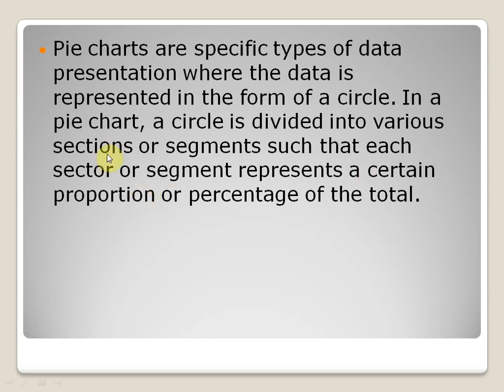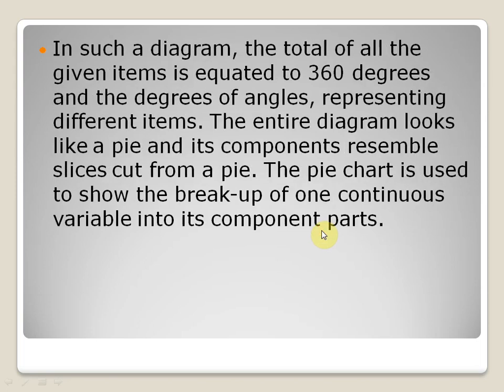In such a diagram, the total of all the given items is equated to 360 degrees, and the degrees of angles represent different items. The entire diagram looks like a pie and its components resemble slices cut from a pie. The pie chart is used to show the breakup of one continuous variable into its component parts.